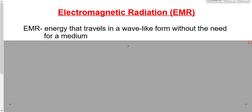Look up in the sky right now and we're going to see light coming from the sun. That light originated at the sun, by the way, eight minutes ago. It traveled through mostly empty space on its way to the earth and made it here, no problem, through mostly empty space. Electromagnetic radiation: energy that travels in a wave-like form without the need for something to travel through.